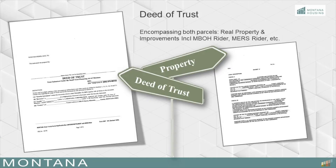A deed of trust acts as an agreement between the homeowner and a lender. It states not just that the loan will be repaid, but that a third party called the trustee will hold legal title to the property until the loan is paid off. It is the security for the loan and is recorded into public record. The deed of trust in a CLT encompasses both parcels — the leasehold interest in the real property and the fee simple interest in the improvements. When reviewing this document, it is important to verify that both parcels are present in the description of the property which is encumbered.